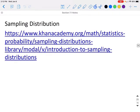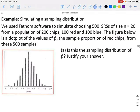If you go to this video, it's going to give you a little bit more detailed instruction about what sampling distribution actually looks like. In this example, we use Fathom software to simulate choosing 500 simple random samples of size 20 from a population of 200 chips, where 100 of them are red and 100 of them are blue. The figure below is a dot plot of the values of p̂ for the sample proportion of red chips from the 500 samples.